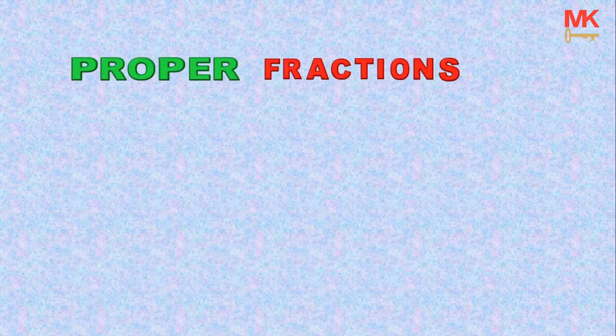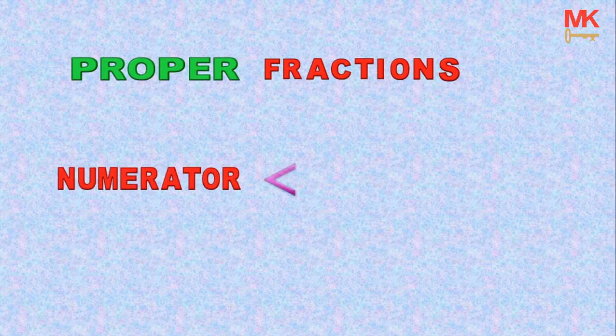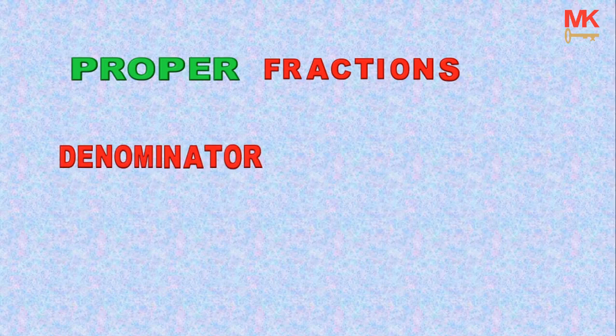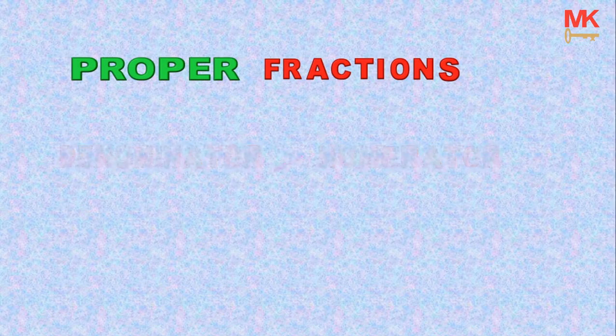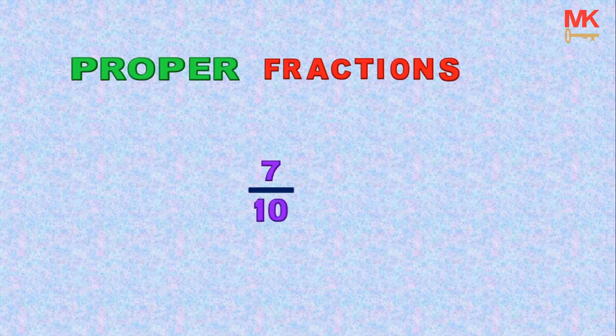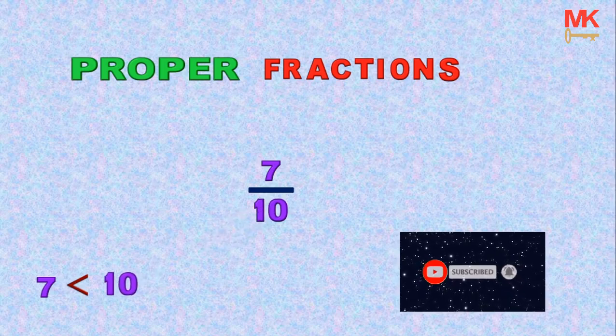So what is a proper fraction? By definition, a proper fraction is a type of fraction whose numerator is less than the denominator, or a fraction whose denominator is greater than the numerator. For example, the fraction 7 out of 10 is a proper fraction because the numerator which is 7 is less than the denominator which is 10.